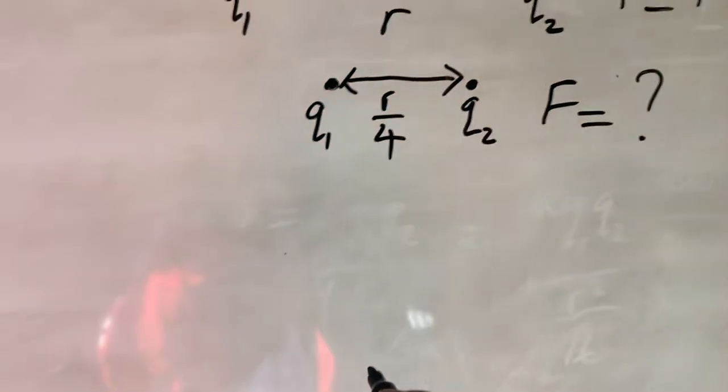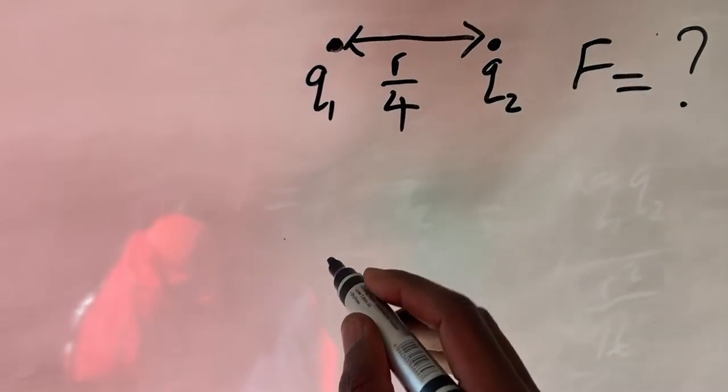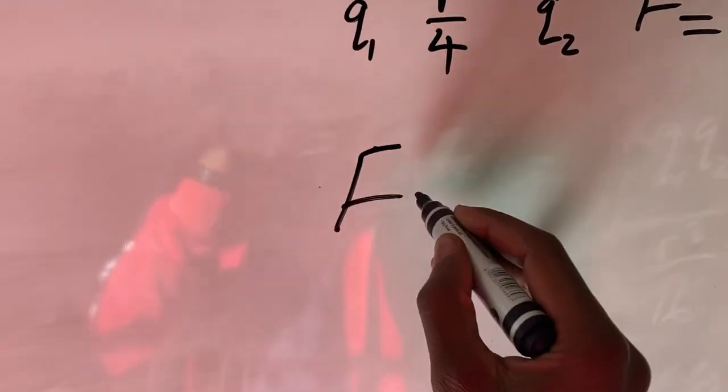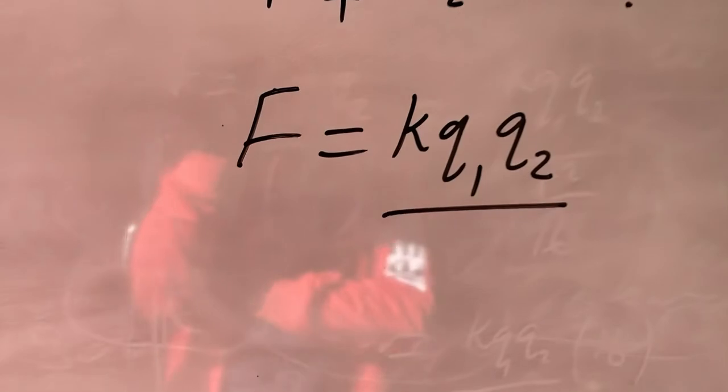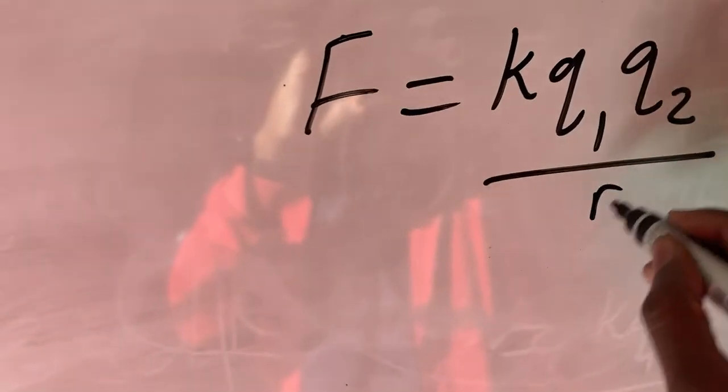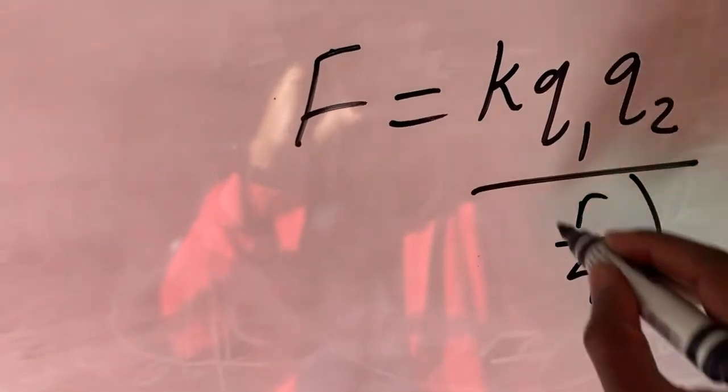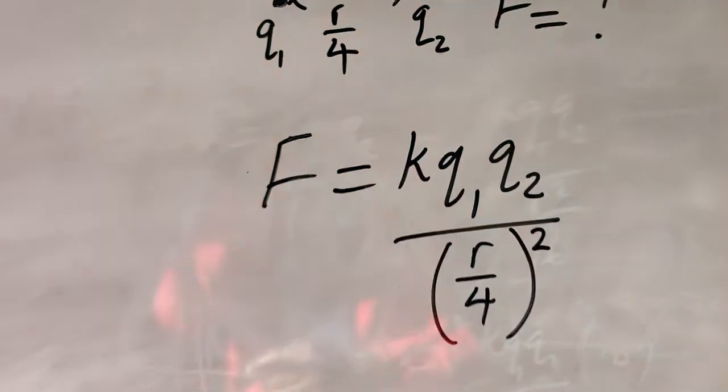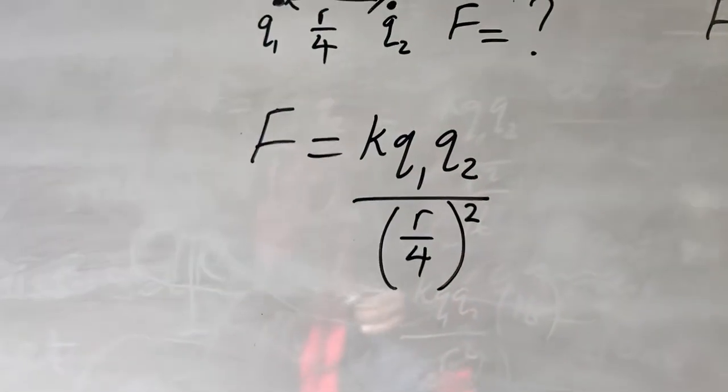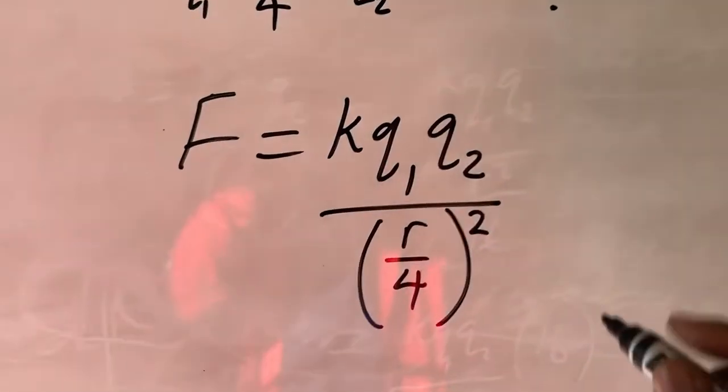So for us to be able now to calculate the force, what we have to do, our f is going to be equal to k q1 q2 over the value of r. Remember we have reduced the distance, which means our r is no longer r, it's now r over 4. So we'll put our r over 4 here, but from the formula you have to square the distance, which we are doing now. Okay, like this. So if we simplify this.